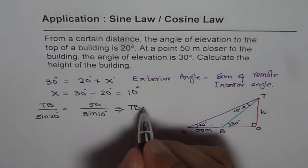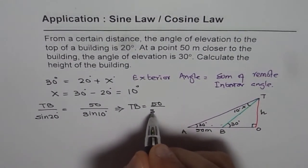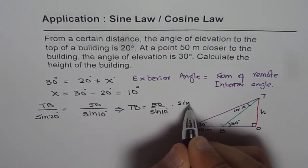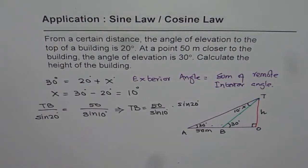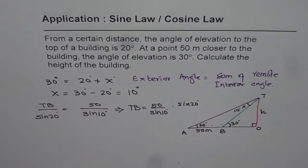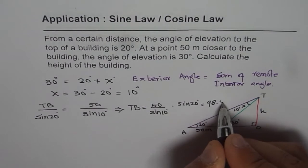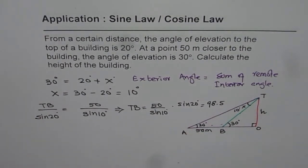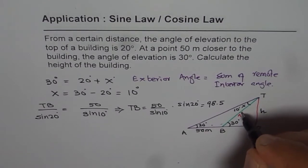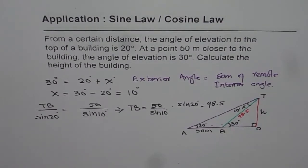So from here we can say, this implies that TB, this hypotenuse, is equal to 50 over sine 10 degrees times sine of 20 degrees, right? We can use the calculator: 50 divided by sine of 10 times sine of 20 degrees that gives us 98.48. Let me do it once again. It is 50 divided by sine 10 times sine of 20 degrees: 98.48.